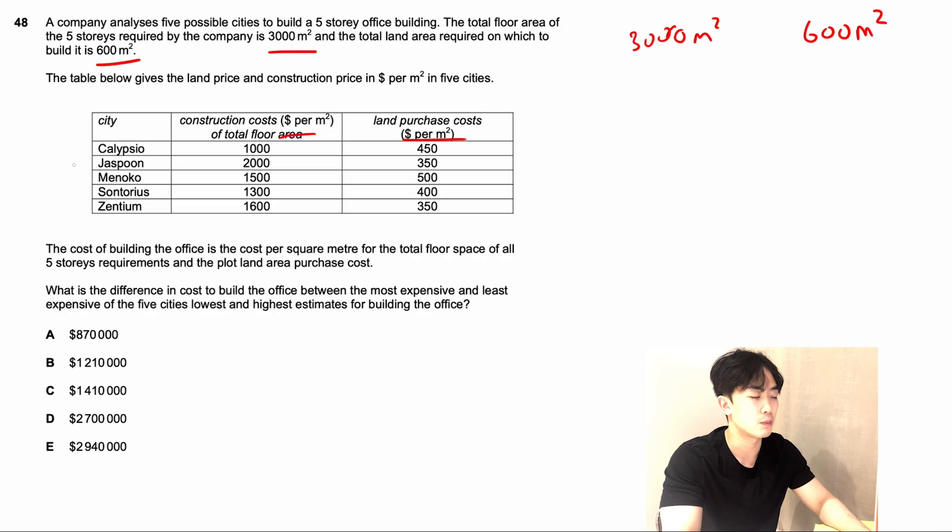Jaspern's $2,000 is going to affect the total price needed to build the skyscraper in Jaspern. If you work it out, you do get a value which is roughly $6 million, $210,000. It's just doing 3,000 times 2,000 plus 600 times 350. Same thing for the least expensive one. The price of the construction cost per meter would affect more relative to the price of the land. Looking at the cheapest one, it's going to be Calypso at $1,000 per meter squared.